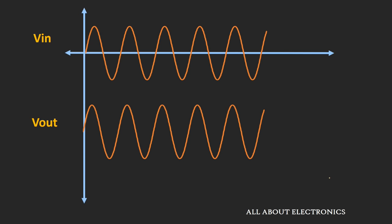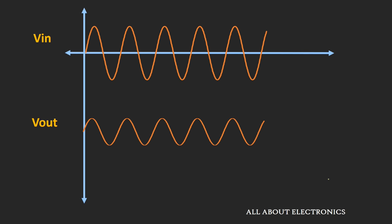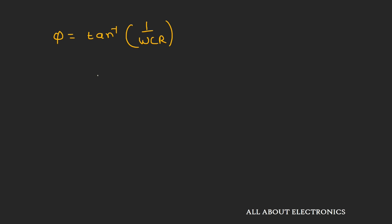This high pass filter not only attenuates low-frequency components, but also changes their phase. The phase of the output signal for the high pass filter can be given by the equation tan⁻¹(1/(ωRC)). Let's derive this equation.